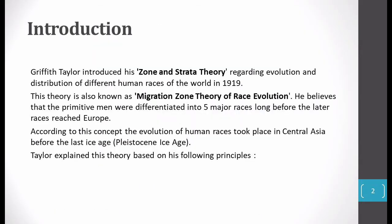Let's start with a general introduction. Zone and Strata Theory was given by Griffith Taylor, an Australian-American geographer, in 1919. They discussed the evolution and distribution of human races around the world. Their theory was based on migration, and they mentioned the migration zone and the theory of race evolution.